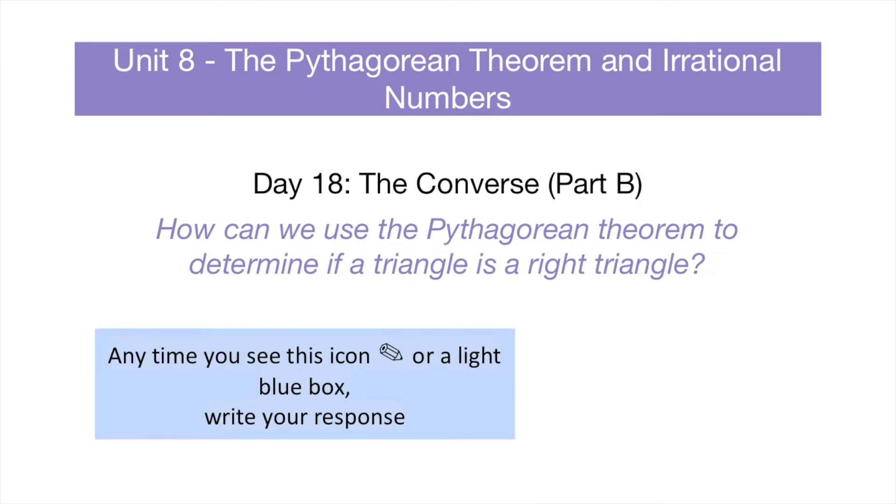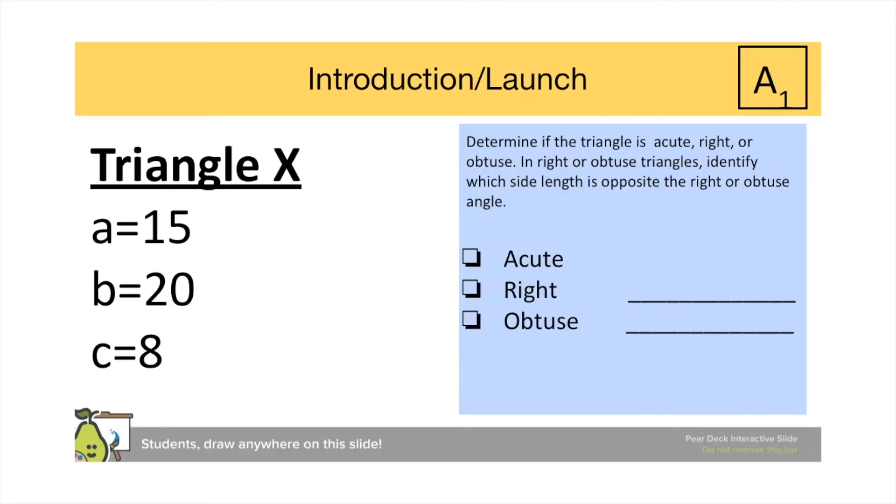Eighth graders are going to continue working on Unit 8, the Pythagorean theorem and irrational numbers, Day 18, the Converse Part B. How can we use the Pythagorean theorem to determine if a triangle is a right triangle?